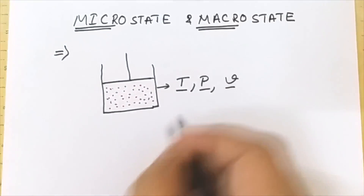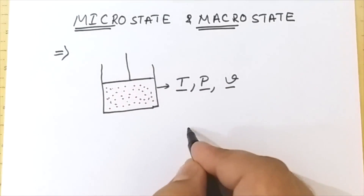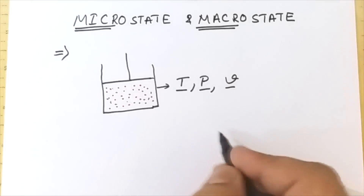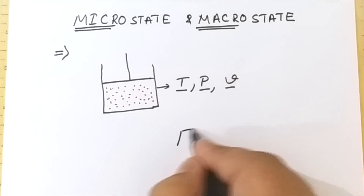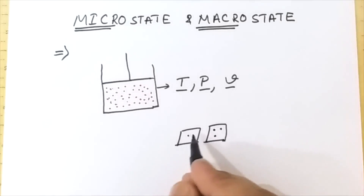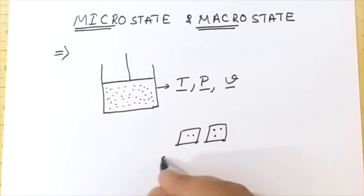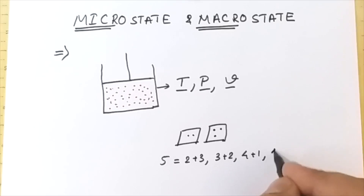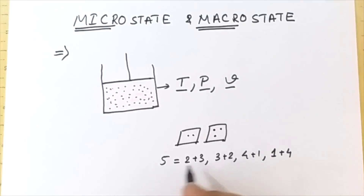Let us understand with one more example. In the game of Ludo, two dice are thrown to get a sum. Suppose I throw two dice and want to get the sum of five. The possible combinations are: two plus three, three plus two, four plus one, or one plus four. So these are four possibilities by which I can get the total sum of five.